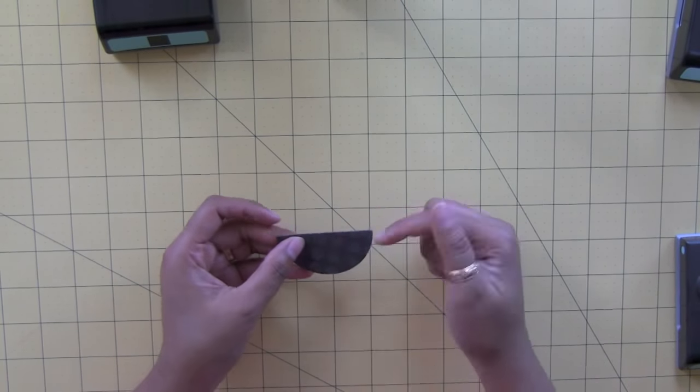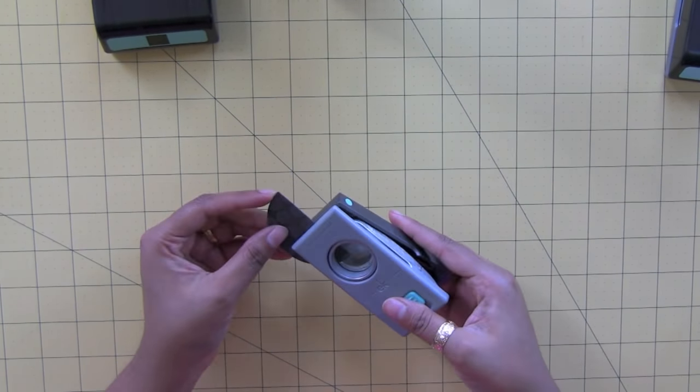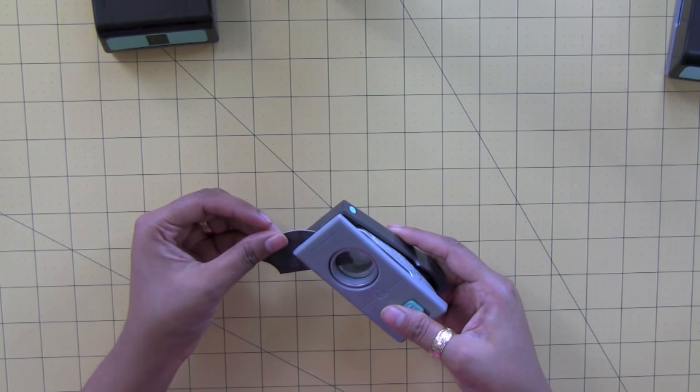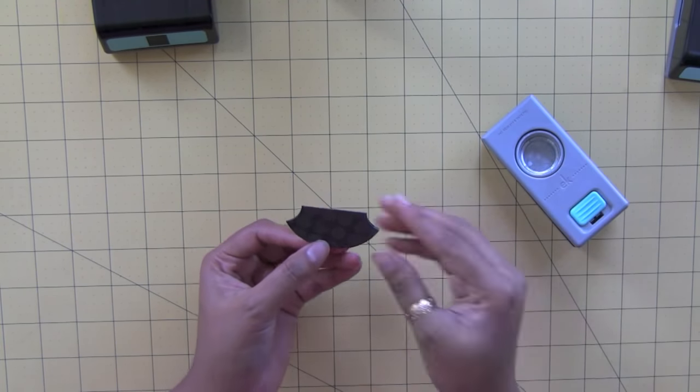Now I'm going to round the sides of this half circle. I'm going to take a one inch circle punch and round both sides. And that's it. All done.